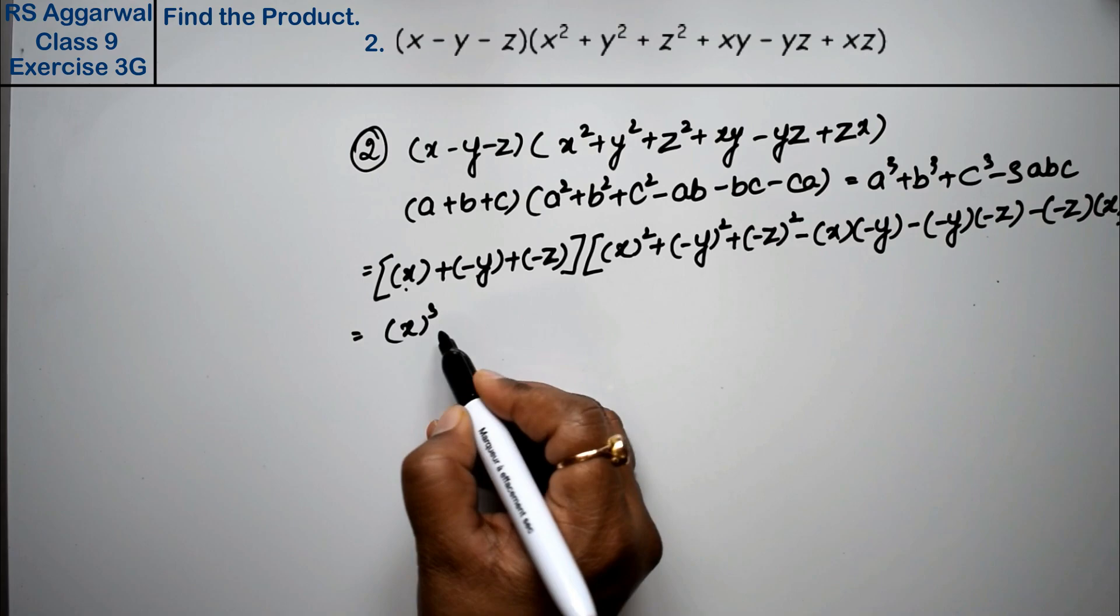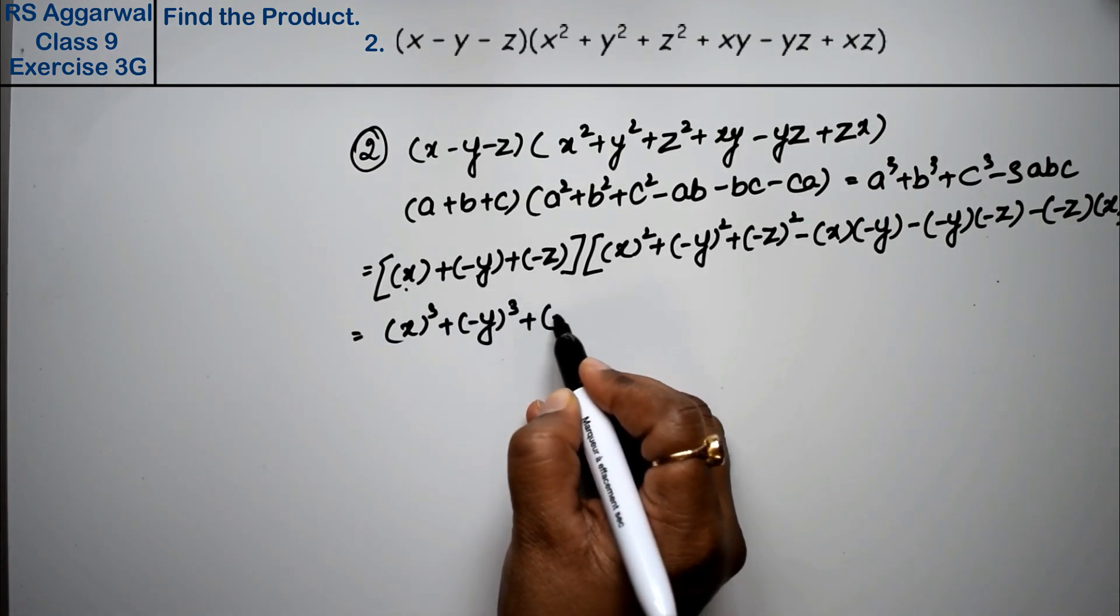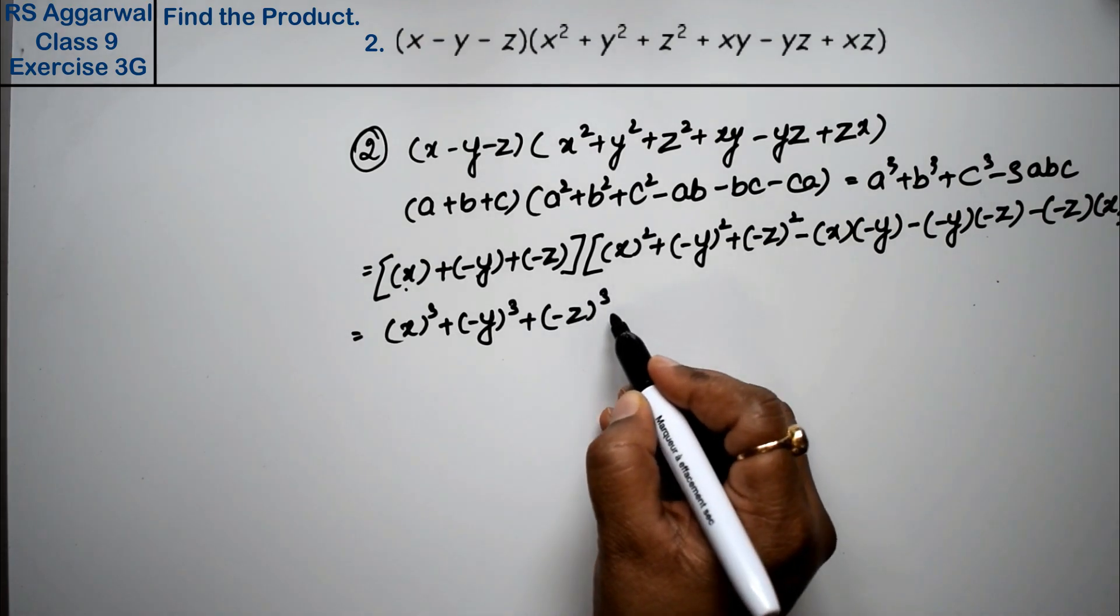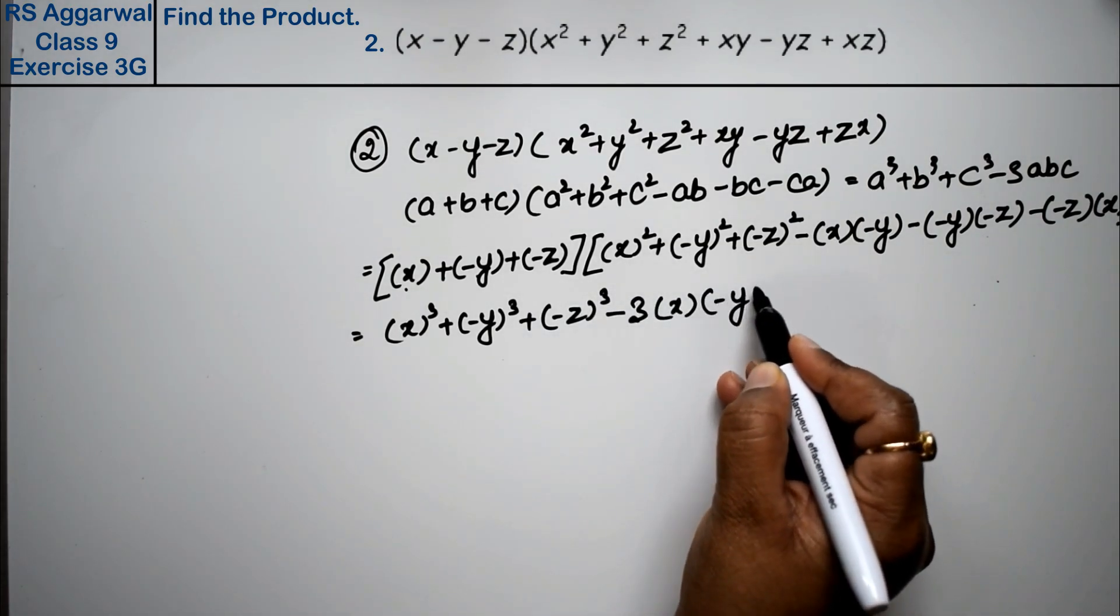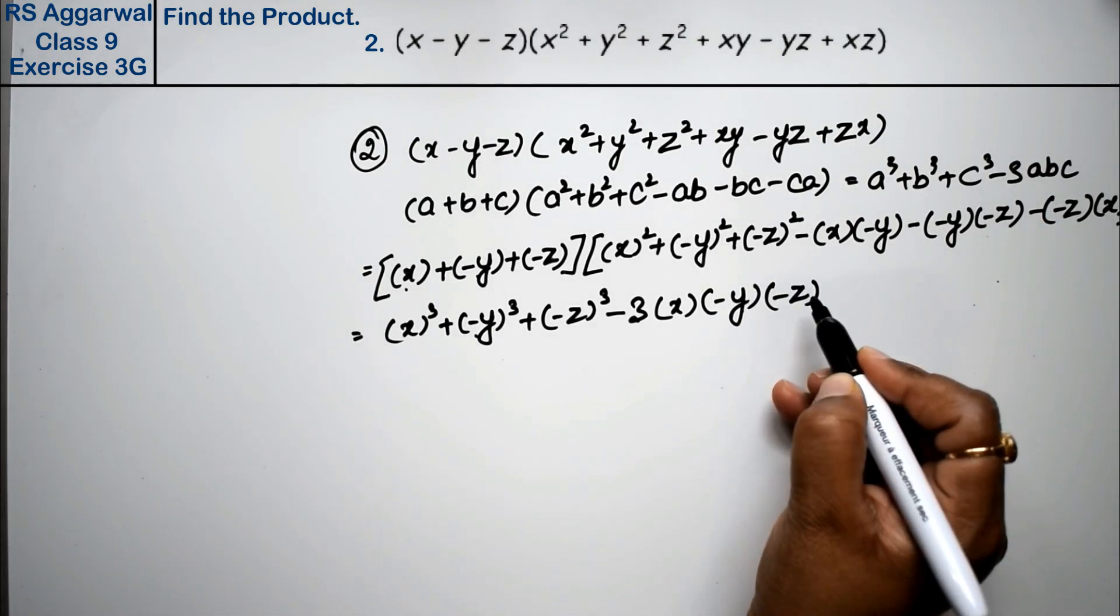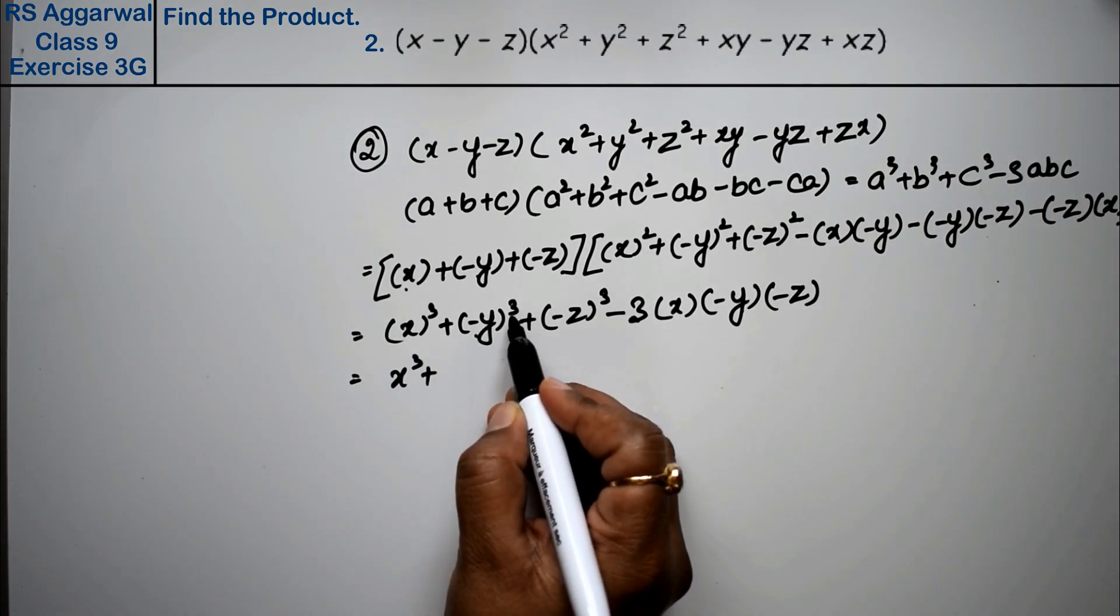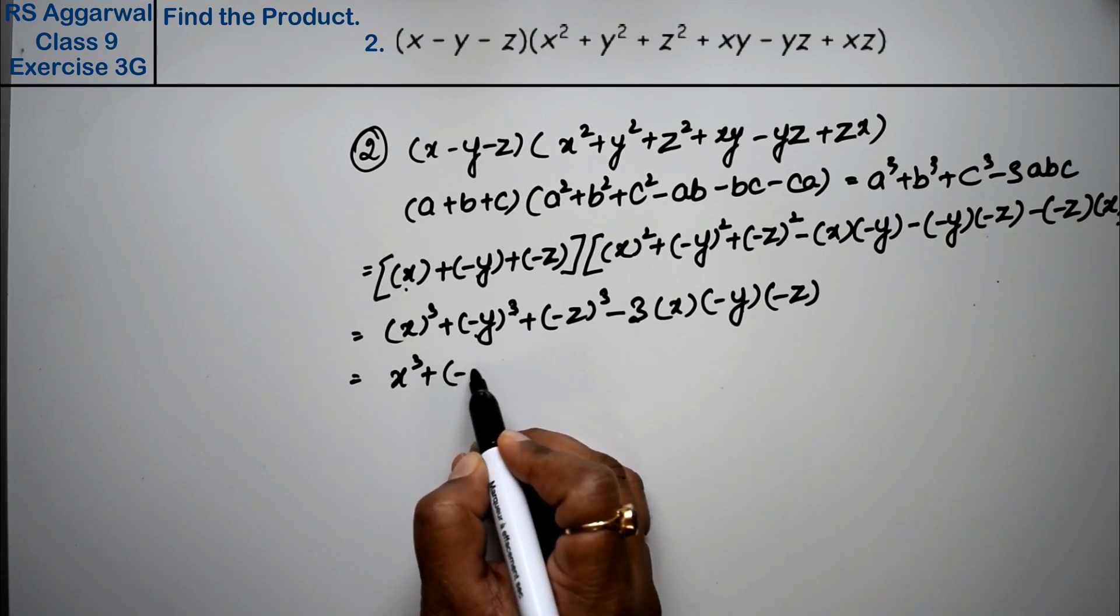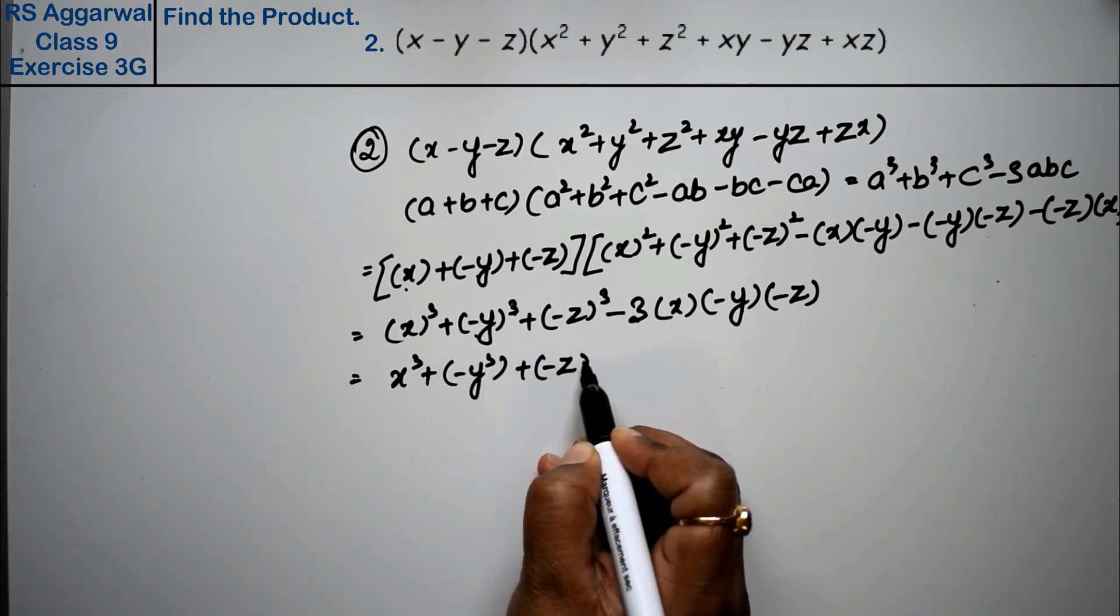x³ + (-y)³ + (-z)³ - 3 × x × b. b is -y, then b is -y. c is -z. So what is our formula? x³ plus this is odd power, so we have negative value, plus z also negative.